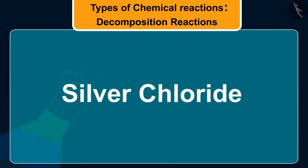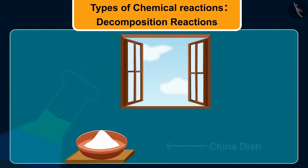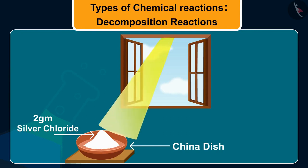Decomposition of silver chloride is another interesting example of decomposition reaction. To perform this reaction, place a small quantity of silver chloride in a watch glass under sunlight for some time. The crystals slowly acquire a grey colour.